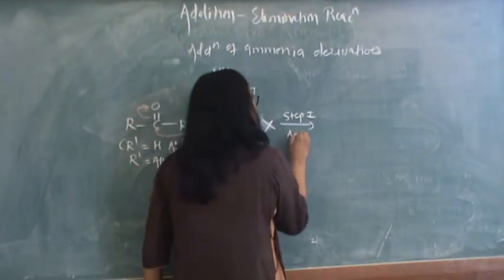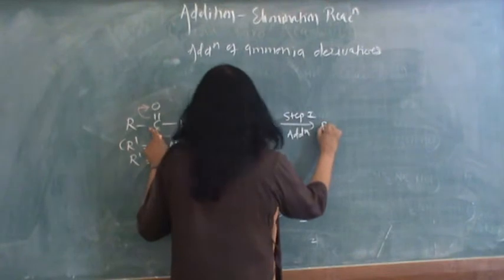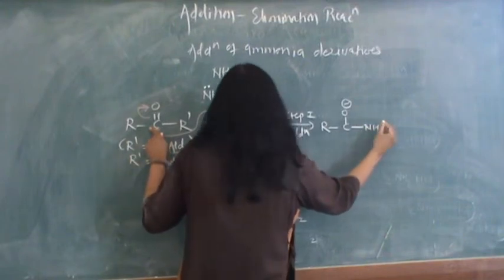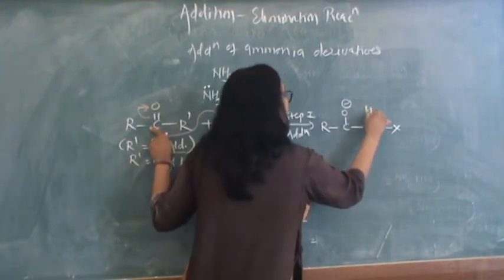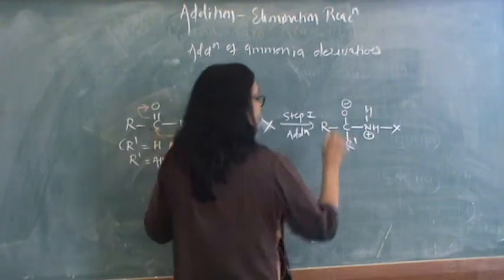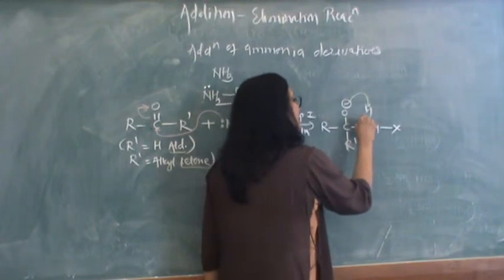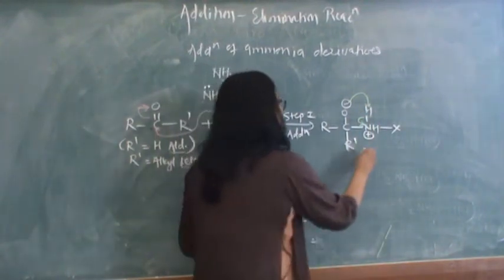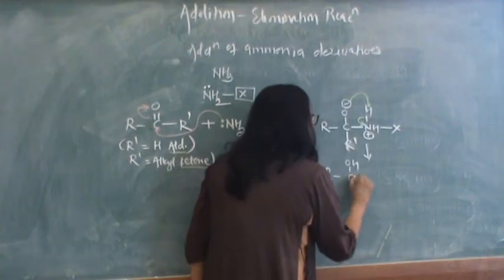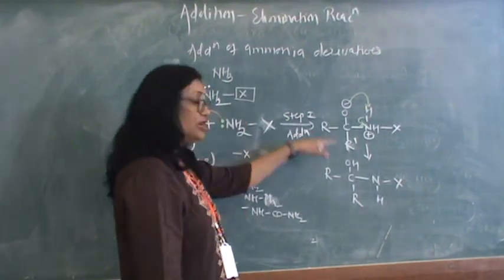So this addition will take place. Now if you follow the arrows, what do you find? You have RCO single bond OH with X, and this particular nitrogen will have positive charge. Along with that, it also has R prime attached to this particular carbon. Obviously, this O minus will take this hydrogen and neutralize charge on this nitrogen. So if it happens, you have RC with OH, single bond R prime, NHX. This is what is obtained after addition.